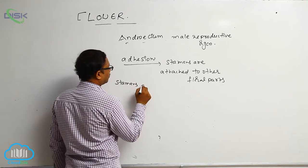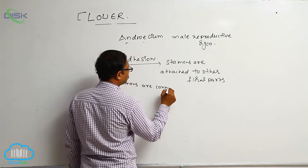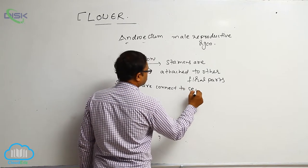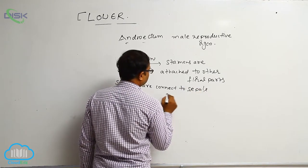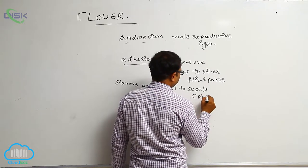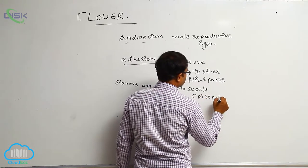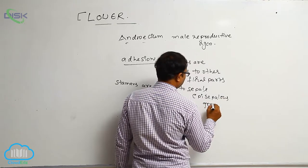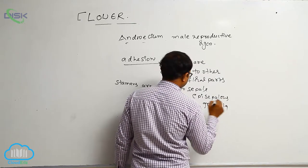Stamens are connected to sepals, so that is known as the Episepalous condition. Example: Grevillea plant.